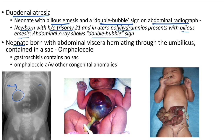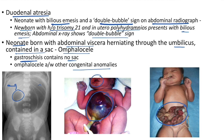A neonate born with abdominal viscera herniating through the umbilicus contained in a sac is a case of omphalocele. In gastroschisis there will be no sac. Omphalocele is associated with other congenital anomalies such as cleft lip and cleft palate.